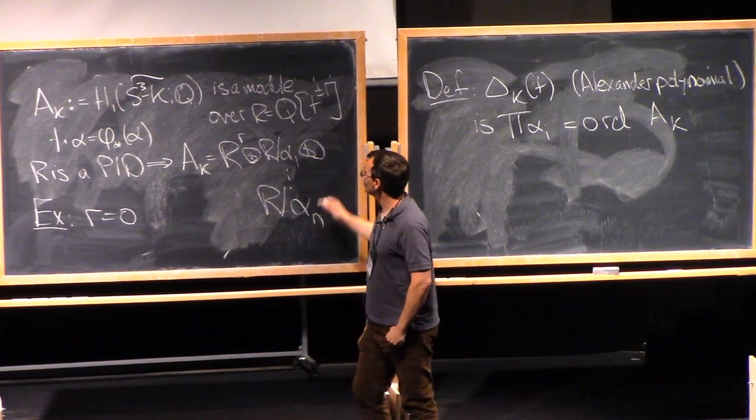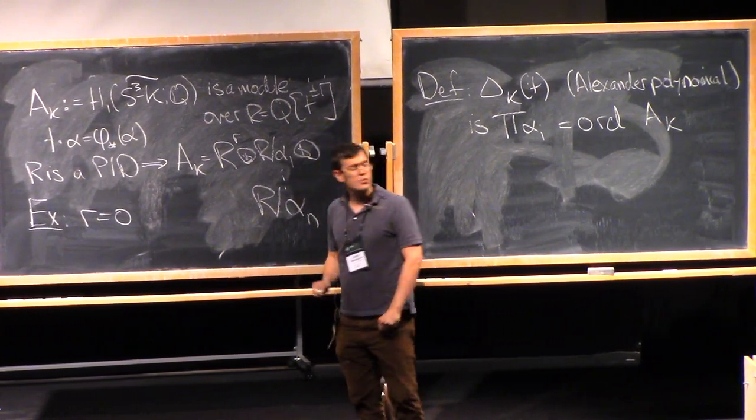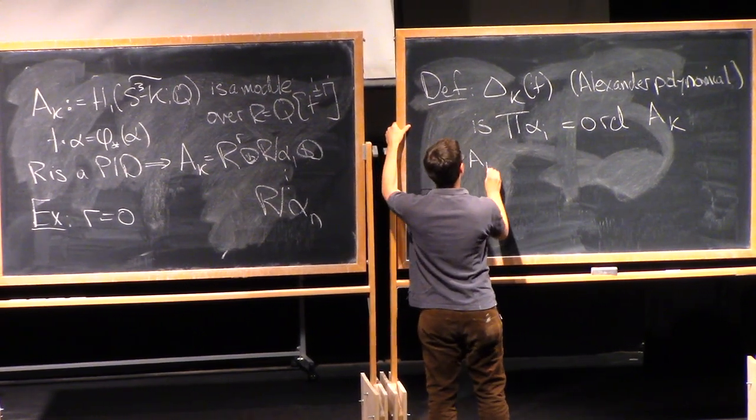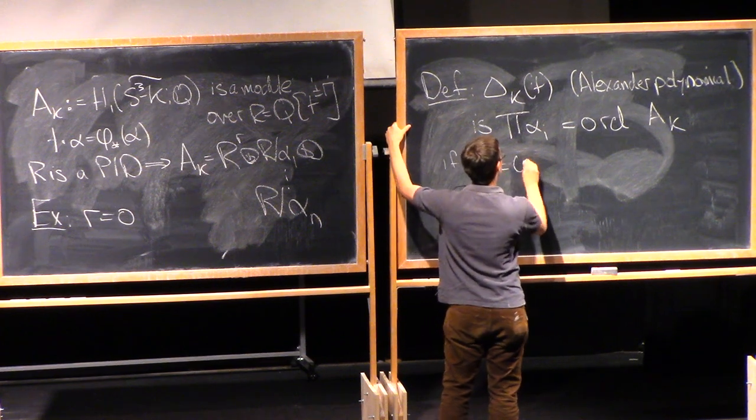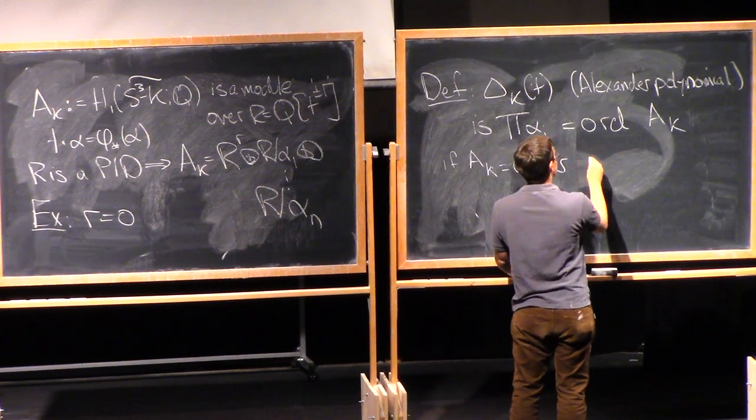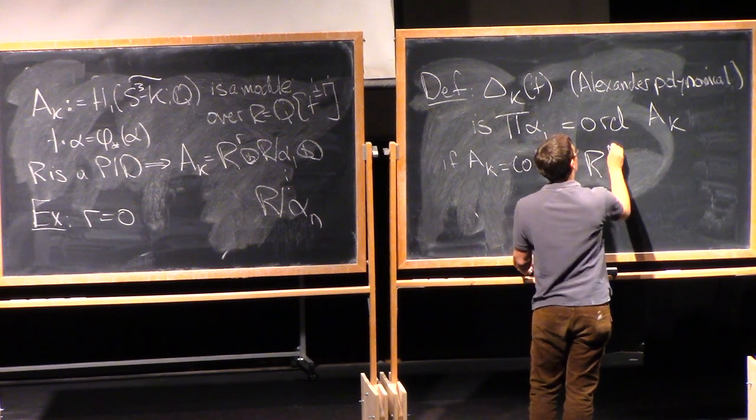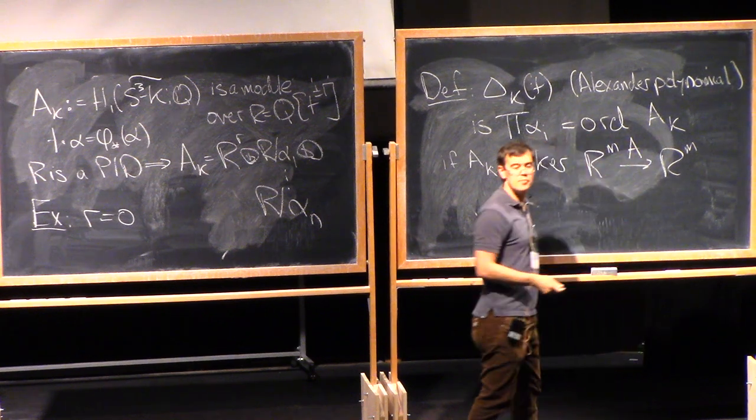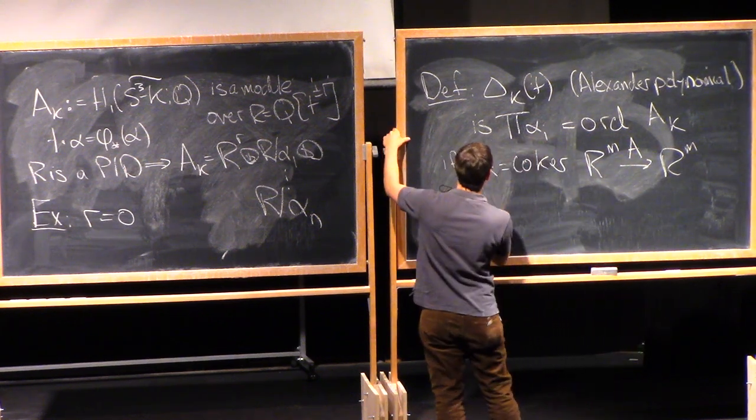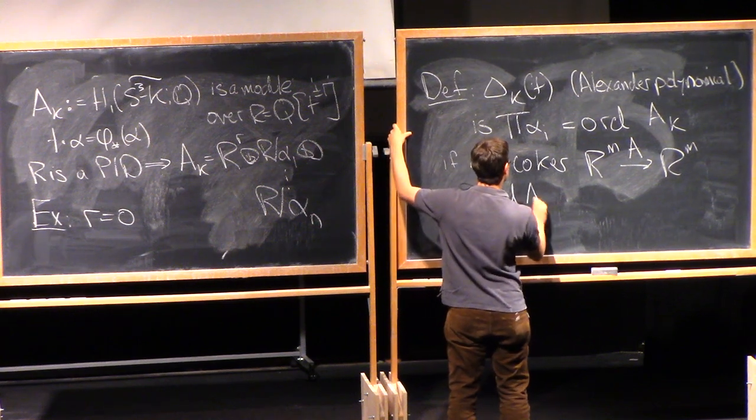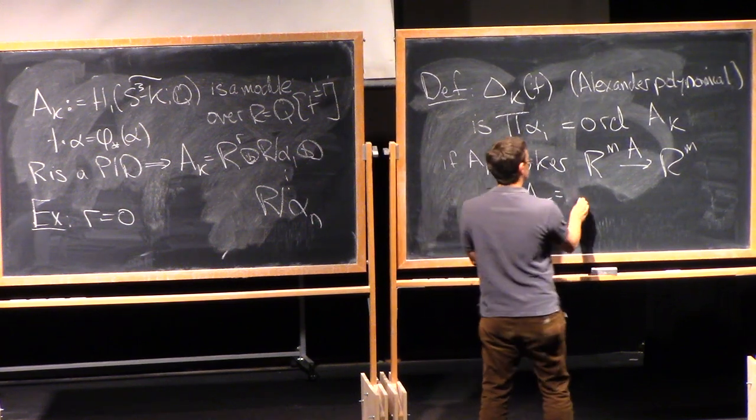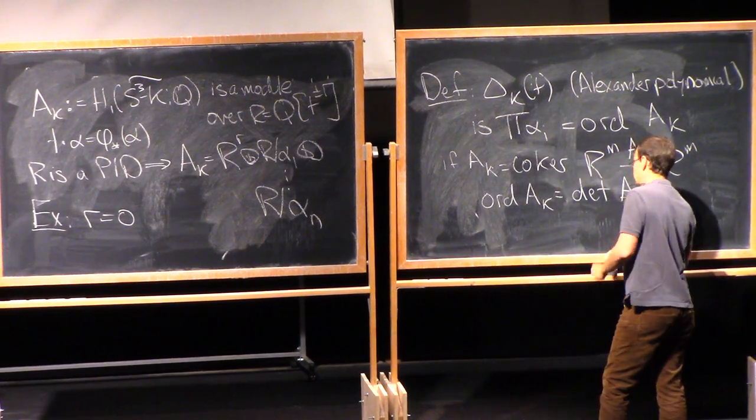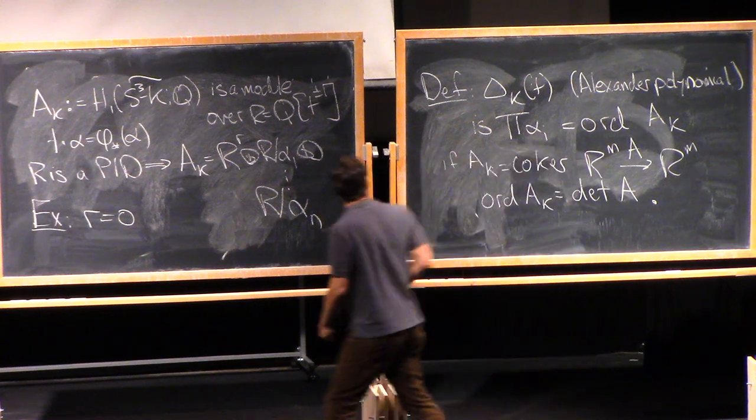Let's make a definition. So the Alexander polynomial, delta K of T, is just the product of the alpha i's. And what that is, let's call it the order of this module AK. So why do we call it the order? Well, if instead of using this PID, we thought about modules over everyone's favorite PID, which is the integers. Okay. So a torsion module over the integers is just a finite abelian group. And in that case, this product is just the order of the group. This is sort of the simplest invariant that we can take of this module. And so you may know a trick for computing the order of a group.